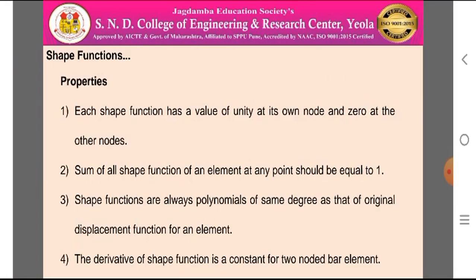The properties of the shape function: each shape function has a value of 1 at its own node and 0 at all others. The sum of all shape functions within an element at any point should be equal to 1. The shape functions are always polynomials of the same degree as the original displacement function. The derivative of the shape function is constant for two-noded bar elements.